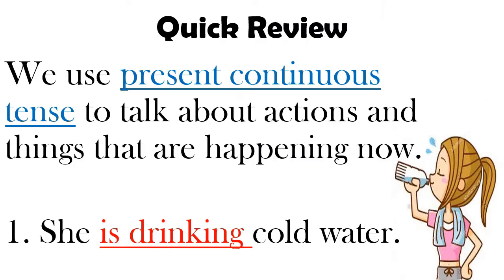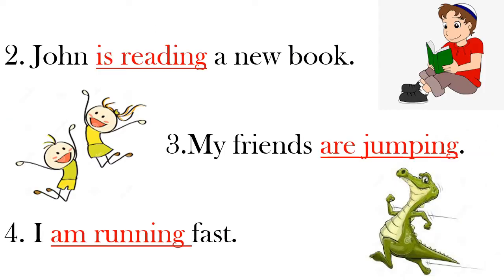Now let's have a quick review. We use present continuous tense to talk about actions that are happening right now. For example: She is drinking cold water. John is reading a new book. My friends are jumping. I am running fast. The verbs is reading, are jumping, and running tell us something is going on at the present moment — that is why we use present continuous tense.